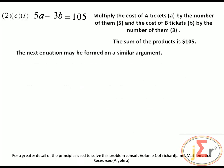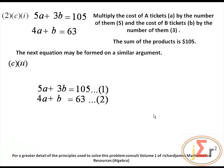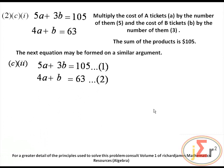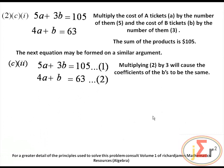The next equation is formed on a similar argument. $63 equals 4 section A tickets plus 1 section B ticket, giving 4A plus B equals 63. There we have our two equations, and we are going to solve this pair of simultaneous equations using the method of elimination.